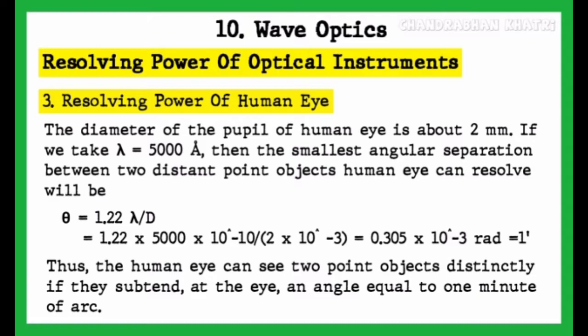Replacing the values: theta equals 1.22 into 5000 into 10 raised to power minus 10, upon 2 into 10 raised to power minus 3. Calculating this value, we get theta equals 0.305 into 10 raised to power minus 3 radian, which is approximately equal to 1 minute. Thus, the human eye can see two point objects distinctly if they subtend an angle equal to 1 minute of arc at the eye.